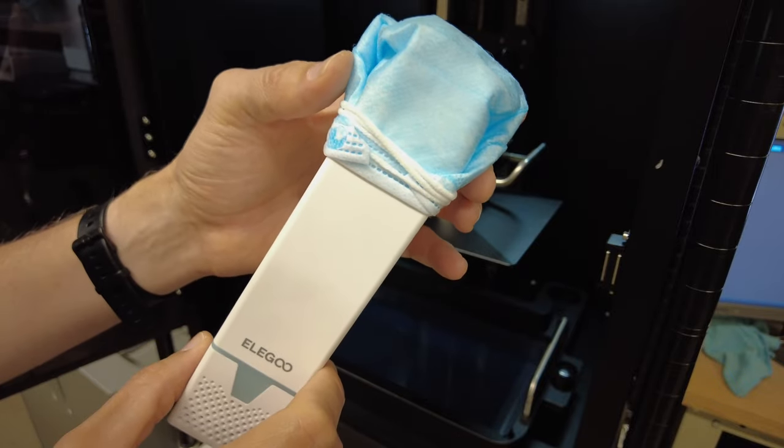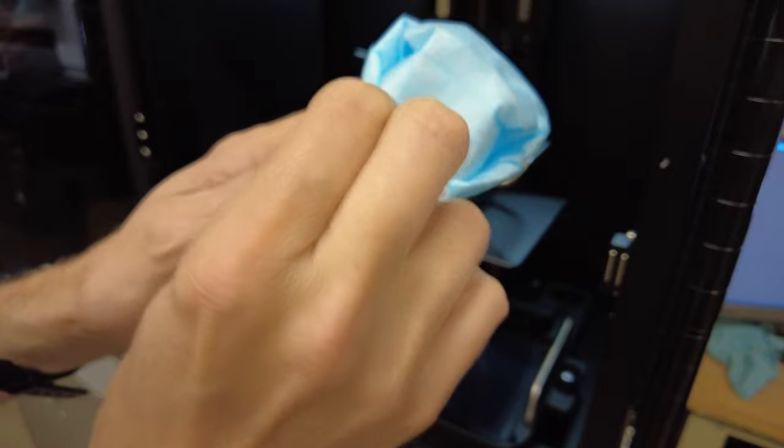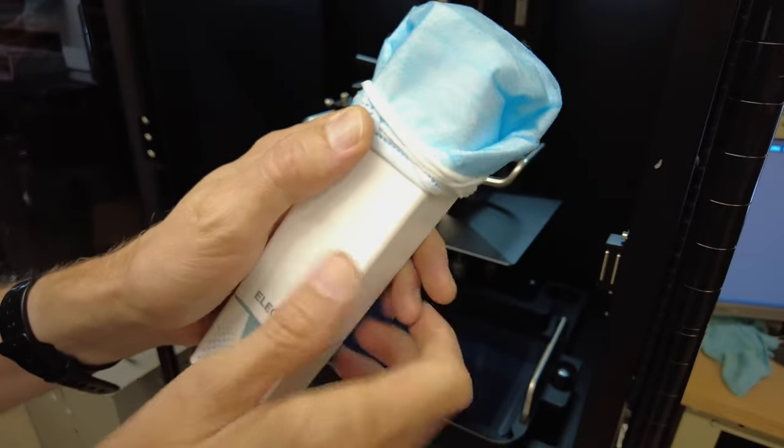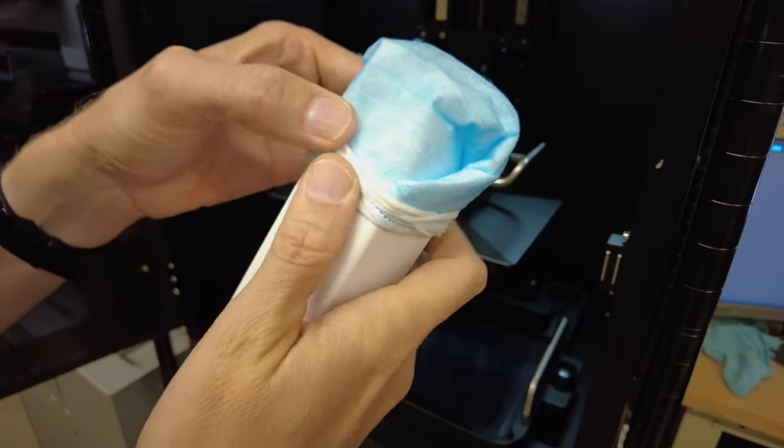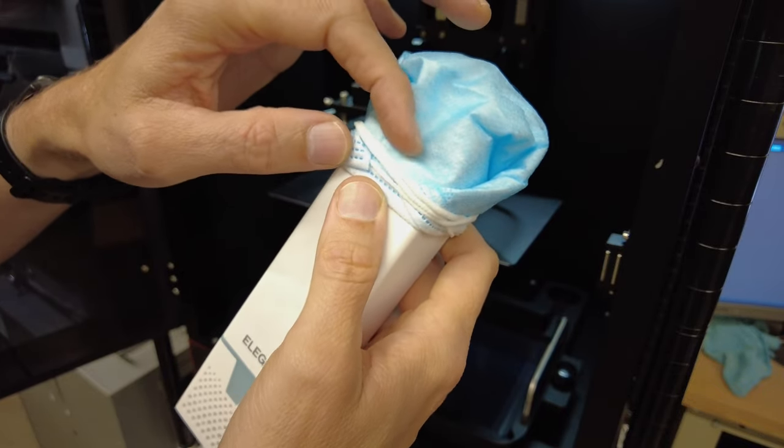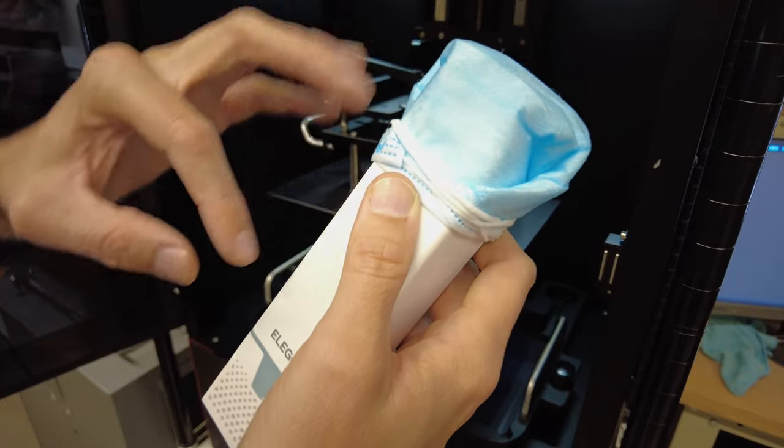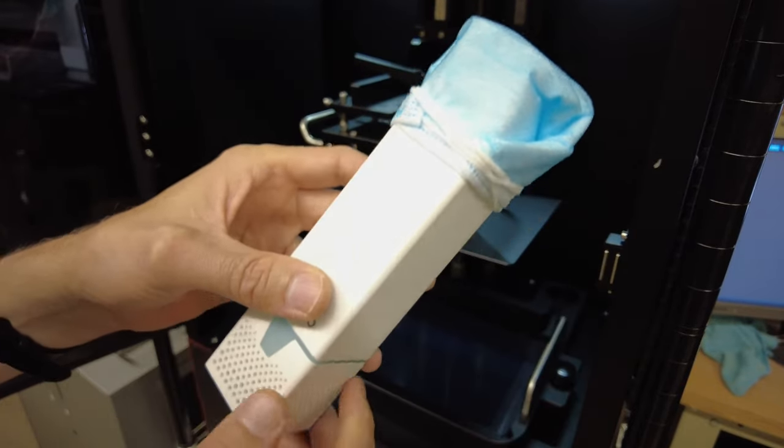So I used a face mask and covered the top of it and then just used the elastic bands from the face mask, wrapped it around to create a little hat for it. And it's good because the top of the filter ends right here. So this creates a lot of surface area to draw air in. So it shouldn't restrict the airflow too much.